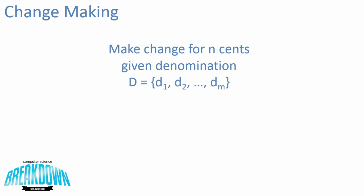Hi everybody, welcome to CS Breakdown. Today we're going to be talking about a dynamic programming approach for change making. The change making problem is the minimization of the number of coins it takes to make change for n cents given a certain denomination.